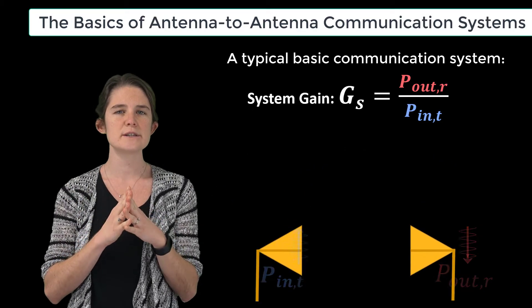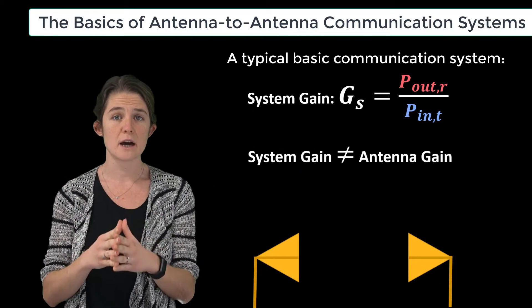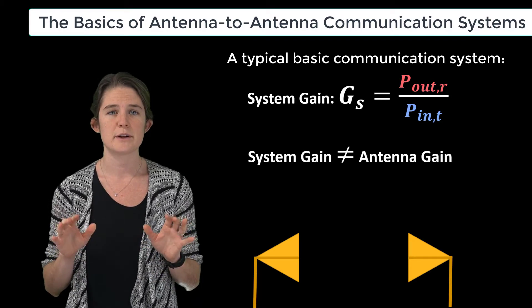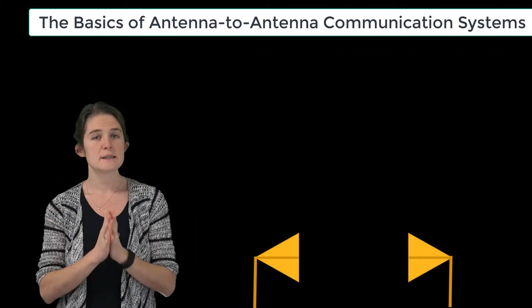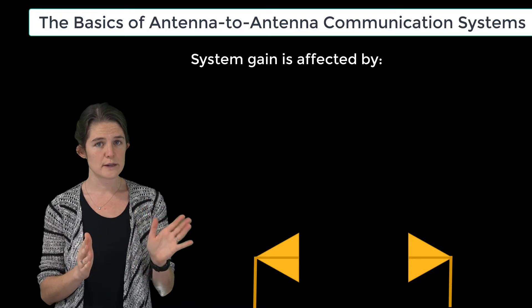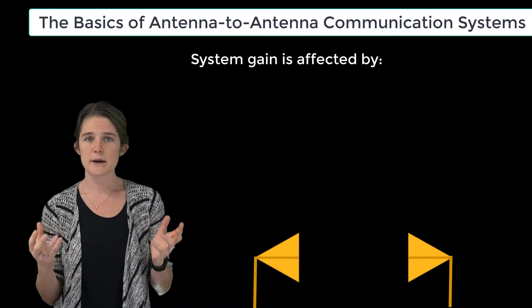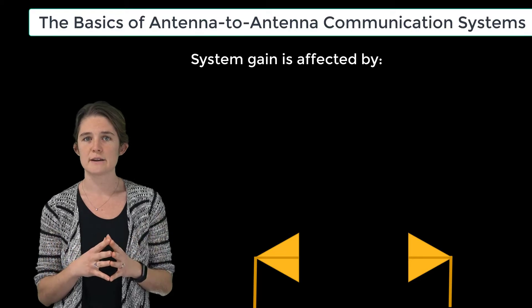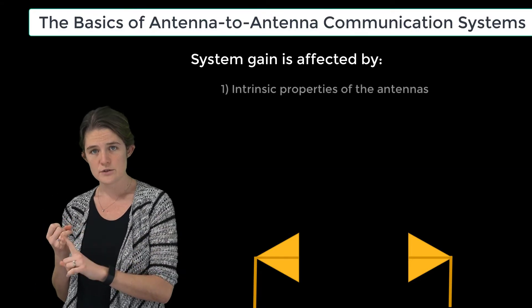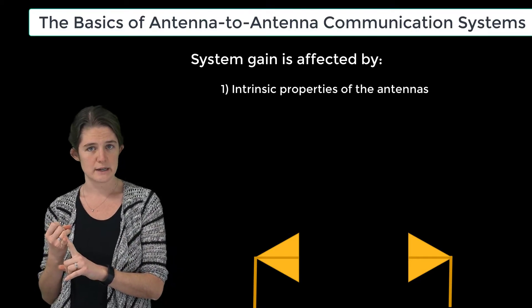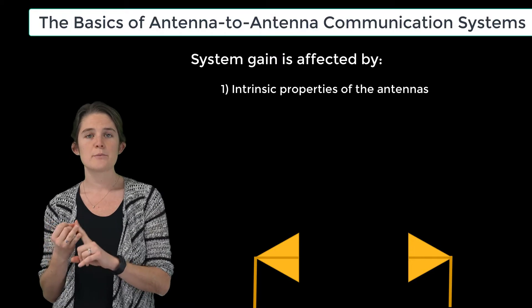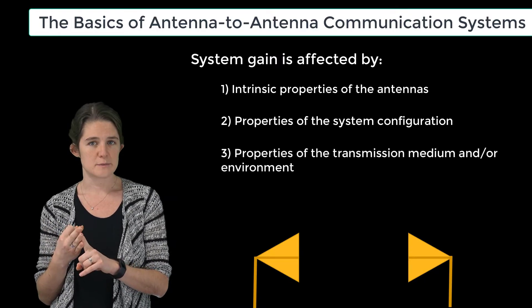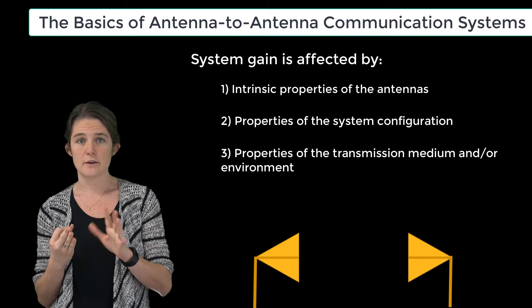It is important to note that this system gain is not the same thing as antenna gain, which is a property of each individual antenna. System gain in this two-antenna system is affected by a number of factors, which can generally be classed under the categories of: intrinsic properties of the individual antennas, properties of the system configuration, and properties of the transmission medium and/or environment.